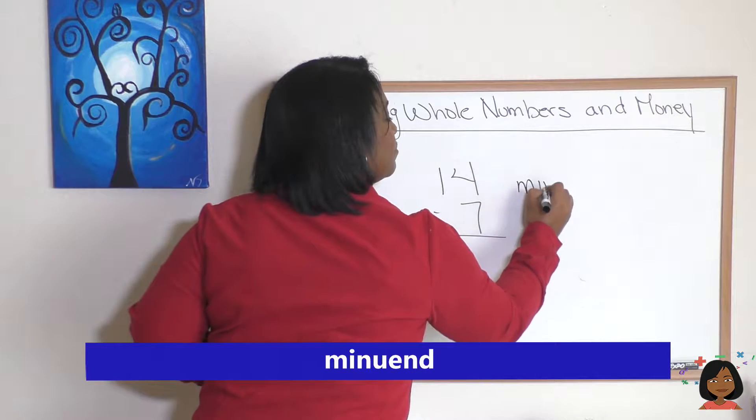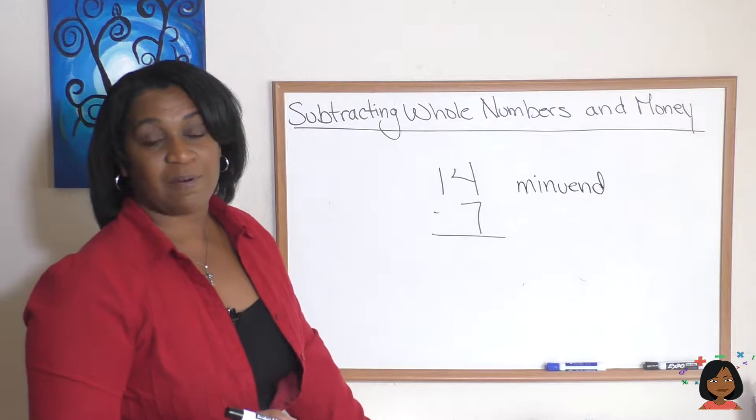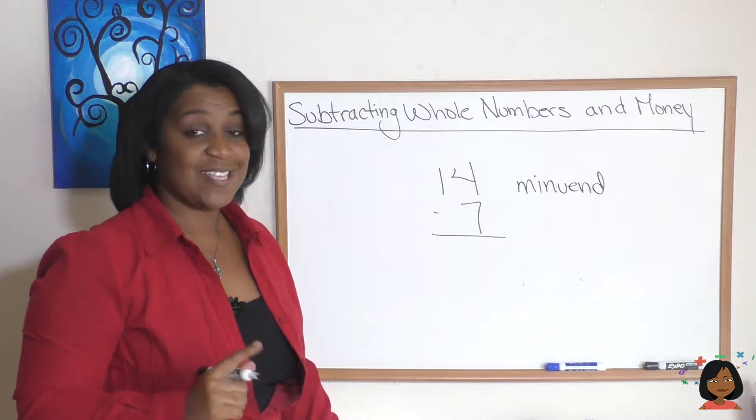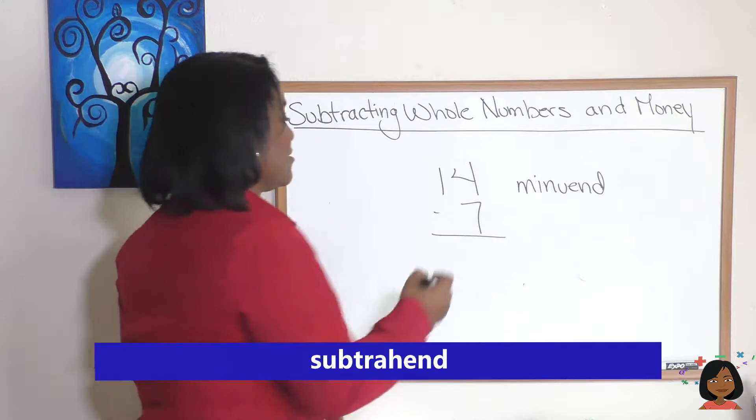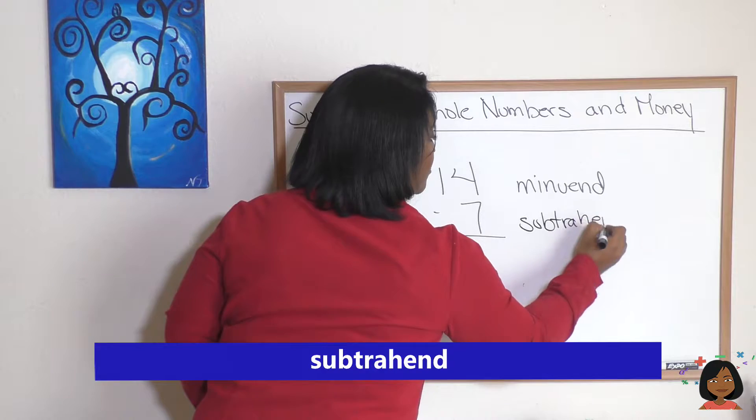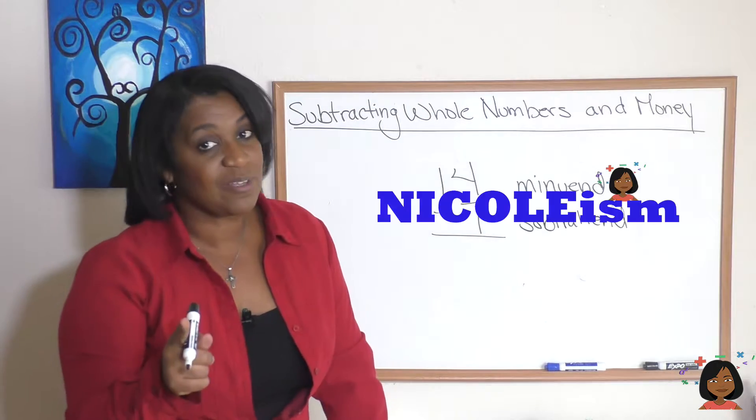The bottom number, the amount that we are subtracting from the minuend, is called the subtrahend. I was not really familiar with these terms for a long time in math and I have a Nicoleism for you to help remember which one is which.